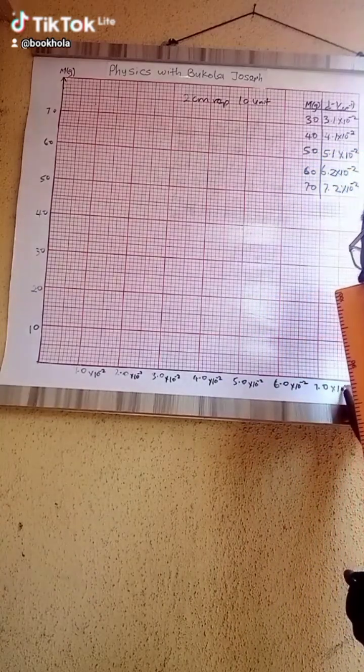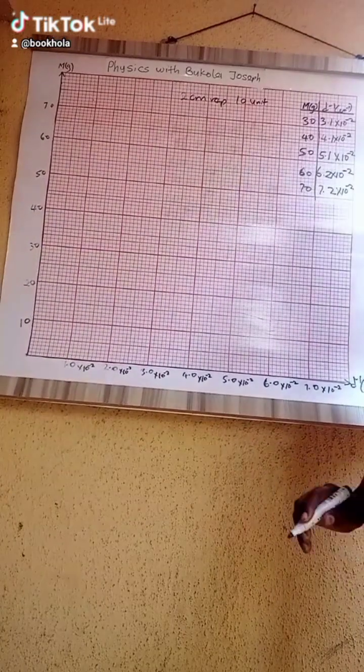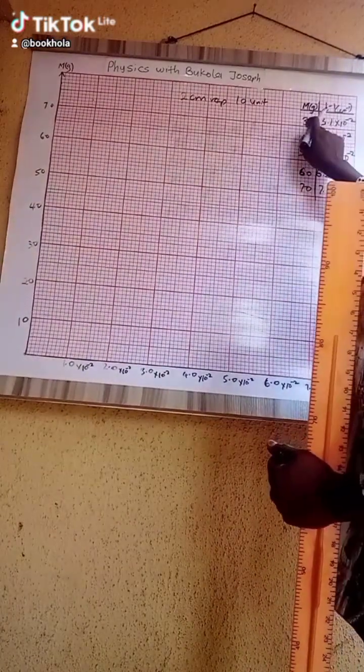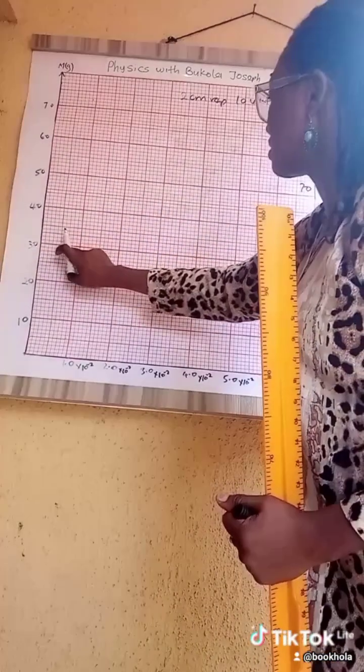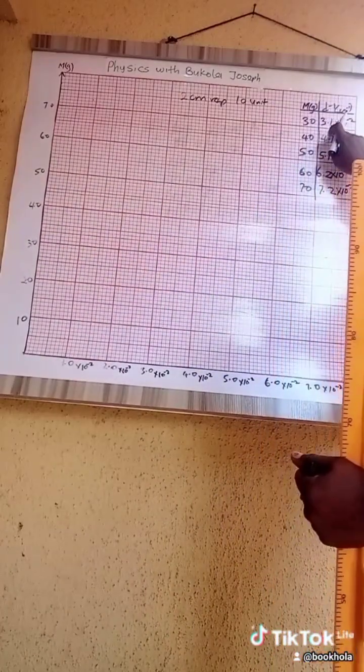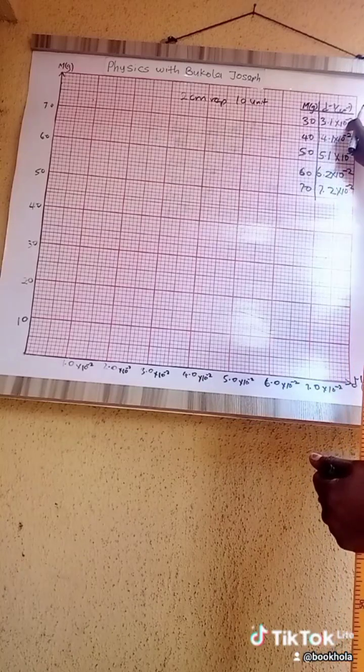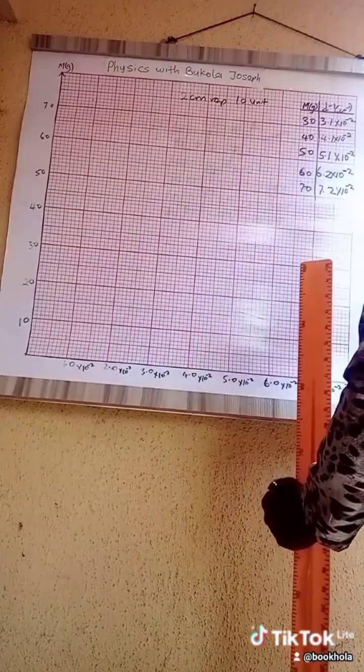Okay, so now let's watch. So we have 30, this is 30 on the vertical for mass, 30. So we trace 30 to 3.1.